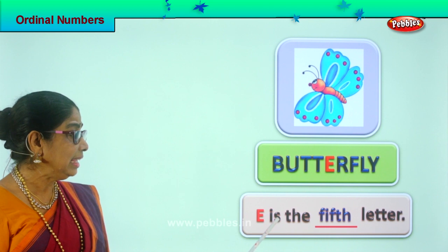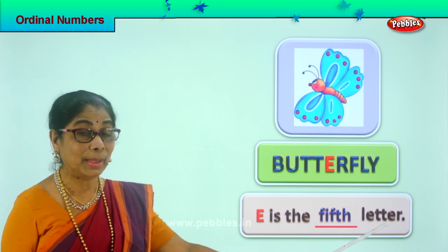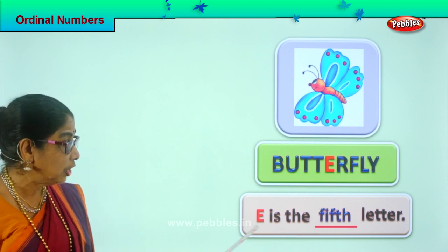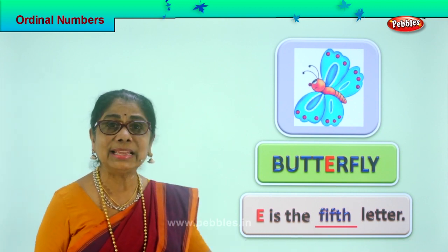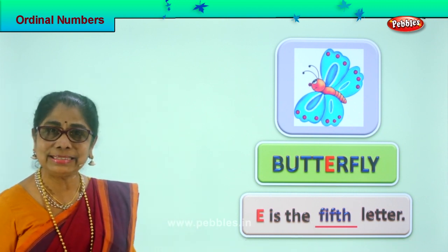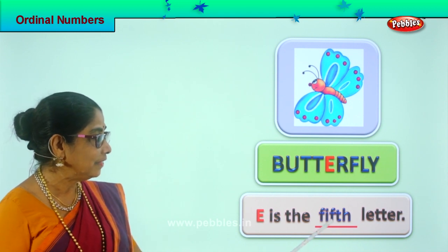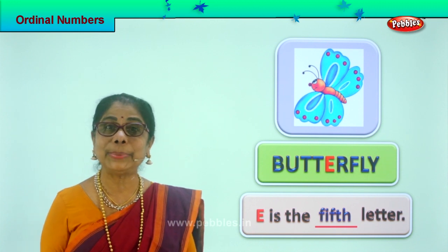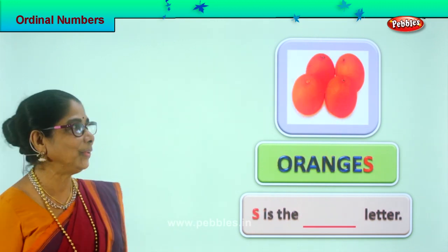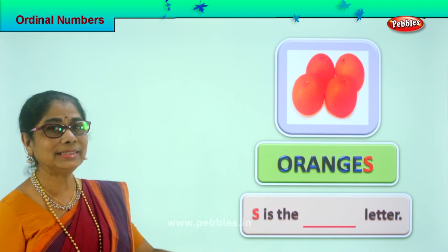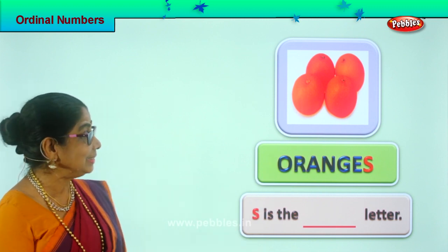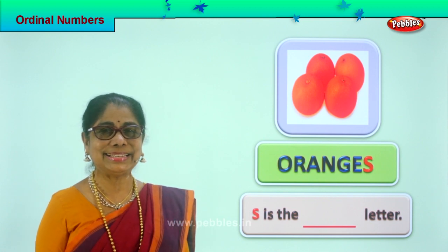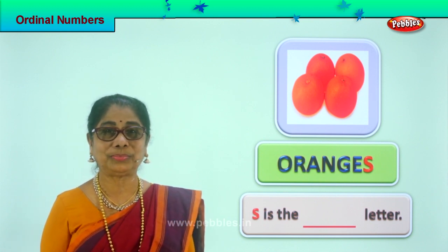E is the fifth letter. Remember, you are not just finding the ordinal position — you are learning to read the full sentence. E is the fifth letter. Good, did you enjoy? Let's take another picture. Look at what you have here — you love this. What is that? Oranges! Yes, you love to eat oranges.